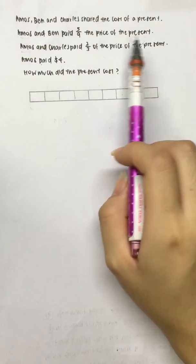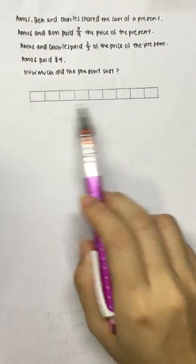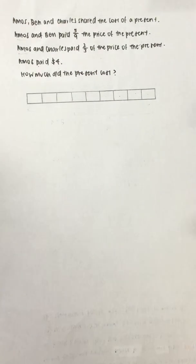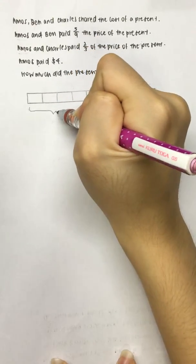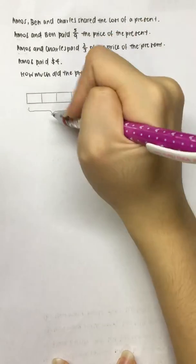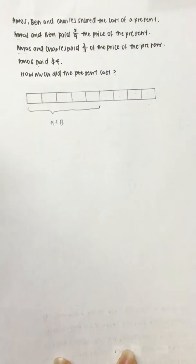Amos and Ben paid 5/9 of the price of the present. I have a model here with exactly 9 units. 5/9 was paid by Amos and Ben.